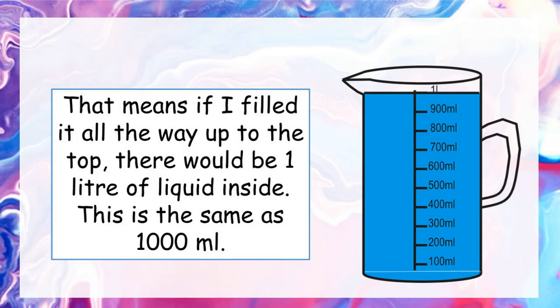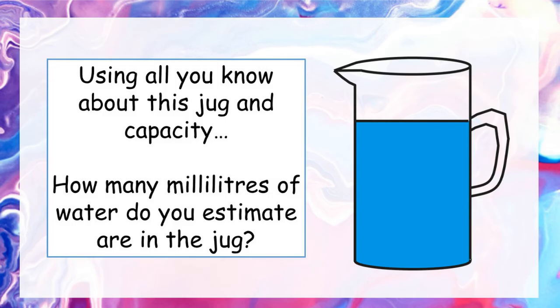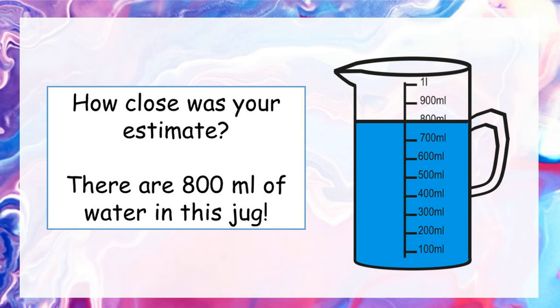Let's try some different estimates. I'm going to show you this 1-litre jug filled with water. Using everything you know about capacity and this jug, estimate how many millilitres of water are inside. Pause the video and write down an answer. The answer is 800 millilitres. An estimate is a close guess — it doesn't have to be exact. The halfway mark is 500 millilitres, and the water is more than that, so it's somewhere between 500 and 1,000. Any estimate in that range is pretty good.